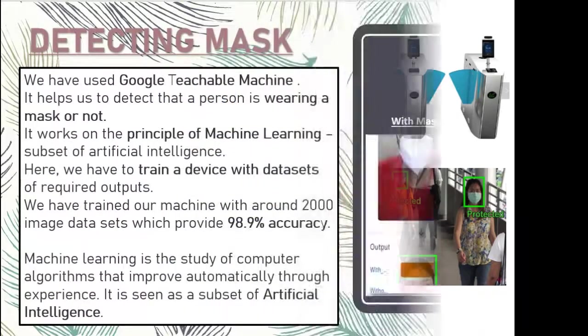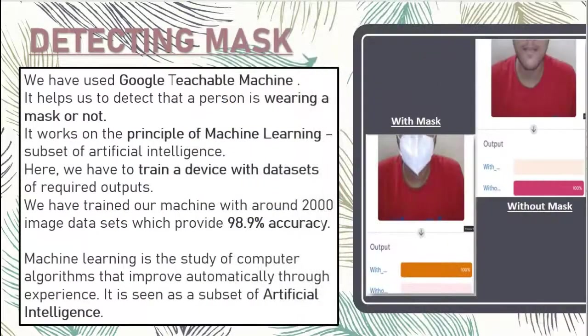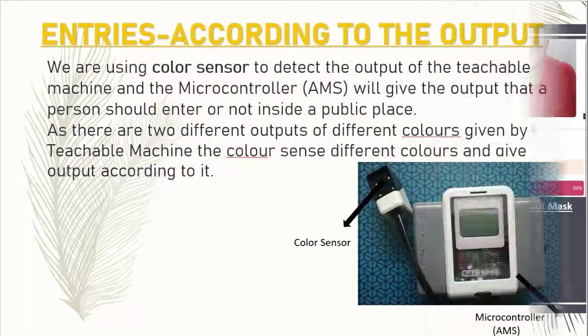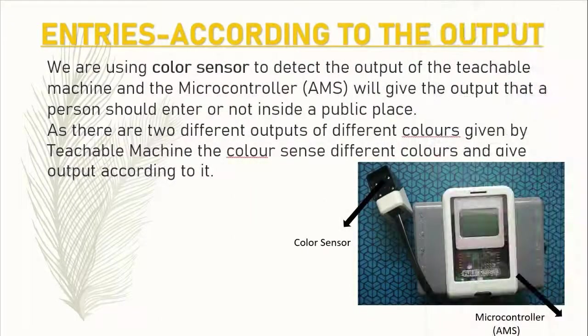We are detecting masks with Google Teachable Machine. Here, we trained our model with around 2000 images — datasets of with mask and without mask. And with the help of machine learning, it can provide us the output in real time. Now, we can determine whether a person is wearing a mask or not.